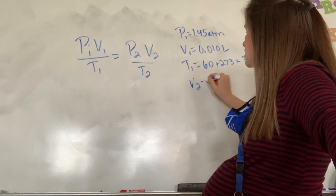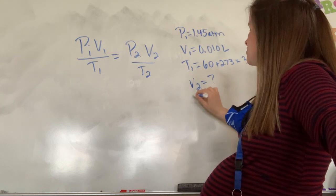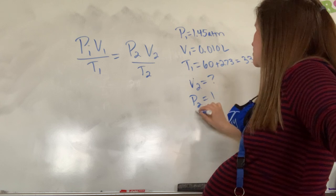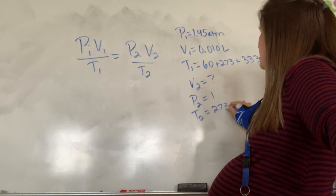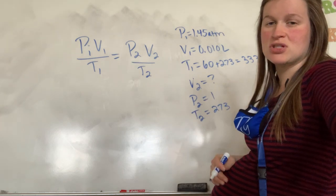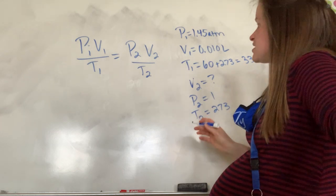And so then at STP, we know pressure is 1 atmosphere and temperature is going to be 273 Kelvin, because that's what it is at STP, standard temperature and pressure. So we're going to plug all of this in.